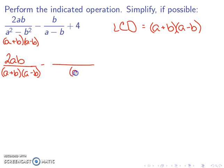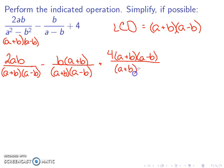The first fraction 2ab over (a + b)(a - b) already has the common denominator on the bottom. My second fraction does not; it only has an (a - b), so I'm going to have to add the (a + b). If I add it to the bottom, I need to also add it to the top. My last one is missing both the (a + b) and the (a - b), so I can add it to both the top and the bottom.